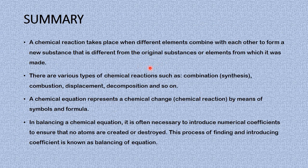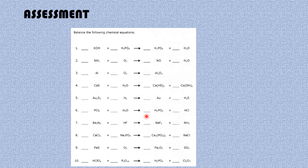Now we've come to the end of the lesson. A chemical reaction takes place when different elements combine to form a new substance different from the original. There are various types: combination, combustion, displacement, decomposition, and so on. A chemical equation represents a chemical reaction by means of symbols and formula. In balancing a chemical equation, it is often necessary to introduce numerical coefficients to ensure no atoms are created or destroyed — this process is known as balancing of equations. Now I want you to pause this video and attempt to balance the chemical reaction in the spaces provided, to find out how much of the lesson you have understood.